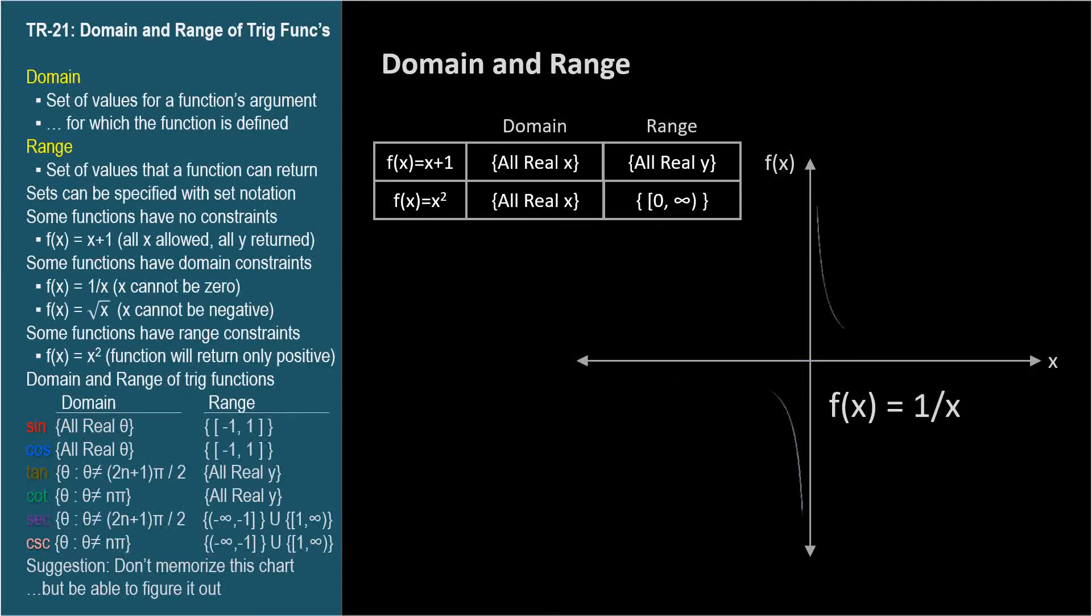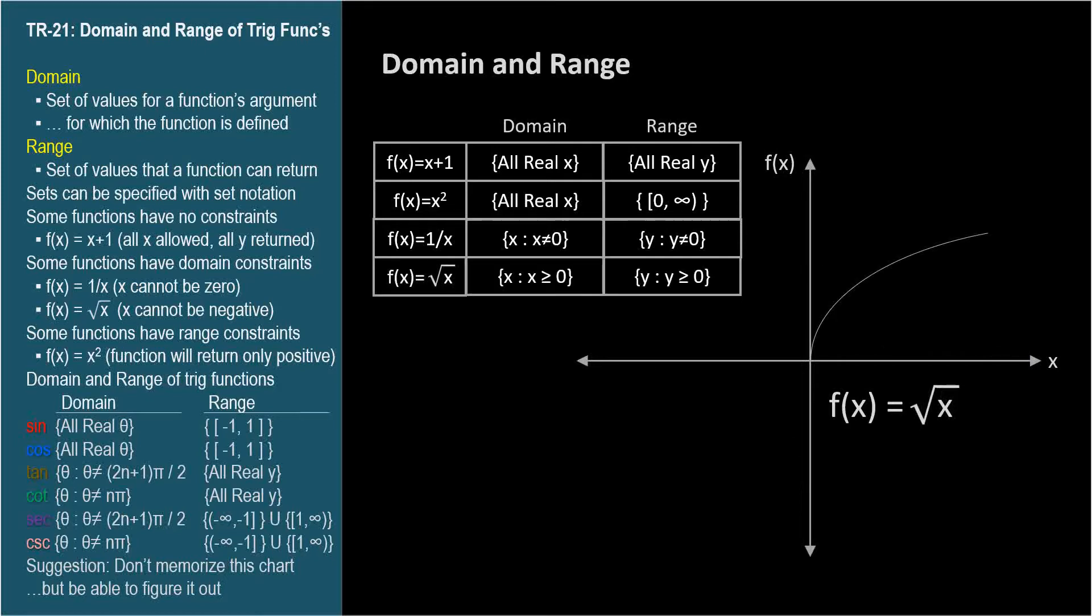When f(x) = 1/x, the domain and range are both constrained, since neither can ever be zero. For f(x) = √x, both domain and range are constrained to real numbers greater than or equal to zero.